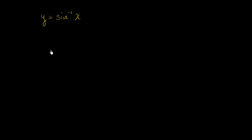What I would like to explore in this video is to see if we could figure out what the derivative of y is with respect to x, if y is equal to the inverse sine of x. I encourage you to pause this video and try to figure this out on your own. The first hint is: we don't know the derivative of inverse sine of x, but we do know the derivative of sine of something. Maybe if you rearrange this and use implicit differentiation, you can figure out what dy/dx is — that is our goal.